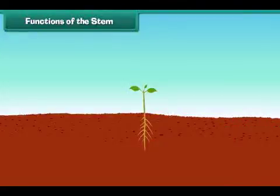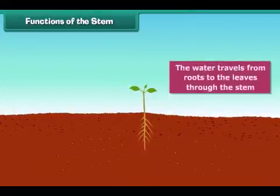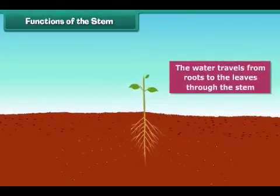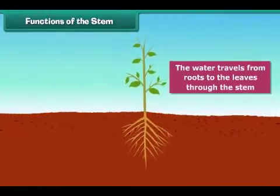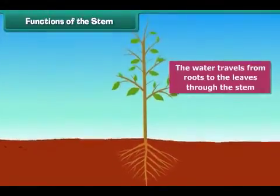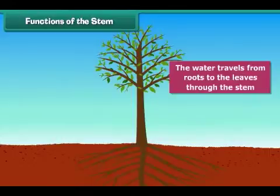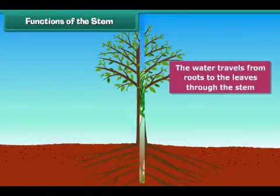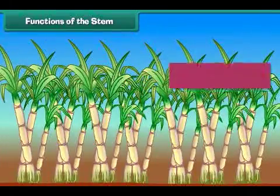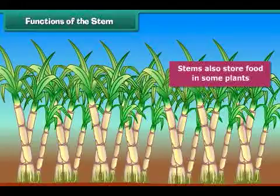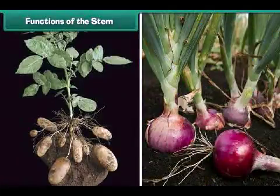Now let's focus on the main functions of stem in plants. The water taken in by the roots travels to the leaves through the stem. This water is used by the leaves to make food. The stem also carries food made by leaves to all parts of the body. Sometimes the food made by the leaves is stored in the stem, as in sugar cane. Other examples are potato and onion — we eat these stems and get nutrition.